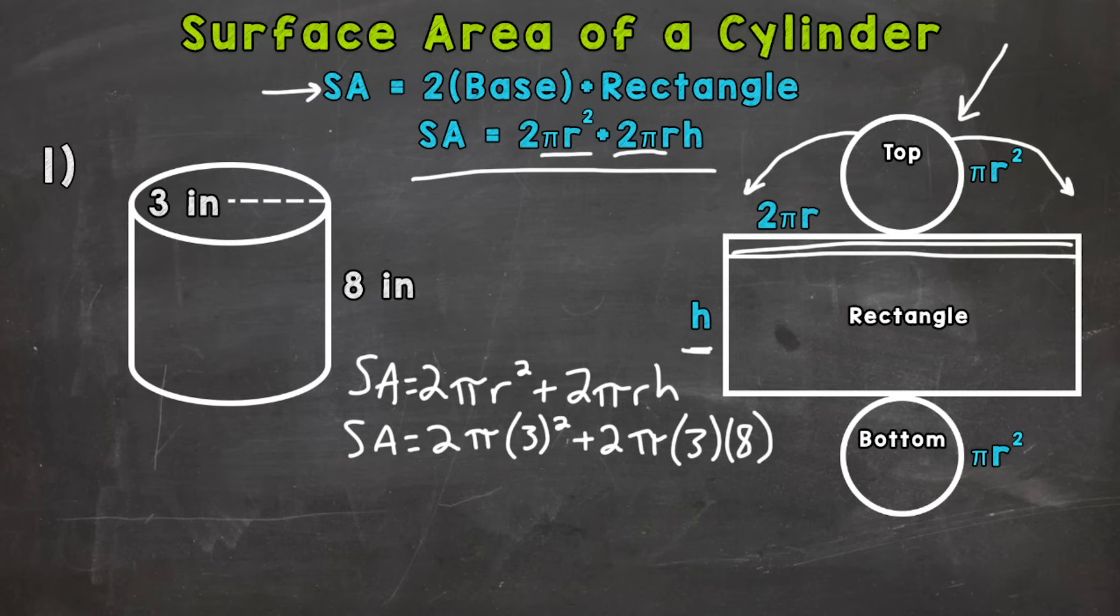And we can start simplifying this and work our way down to the correct answer. So let's do 3 squared here, which is 9, times 2 is 18. So we end up with 18π plus, let's do 3 times 8 is 24, times 2 is 48. So we get to 48π on this side. So we have 18π plus 48π. So that's going to give us 18 plus 48 is 66. So we get to 66π.